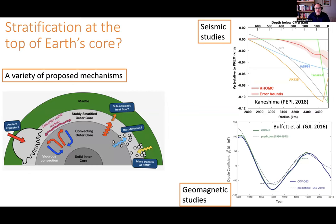The motivation for this work really came from seismology. I'm not a seismologist, but there's been a lot of work studying the seismology of the outermost core. In particular, a number of seismic studies have shown that the upper couple hundred kilometers of the core have an anomalous seismic structure where the seismic wave speeds are slow relative to what would be expected for PREM, which assumes a fully adiabatic core. This has been interpreted as a layer of stably stratified fluid at the top of the core, perhaps a couple hundred kilometers thick.